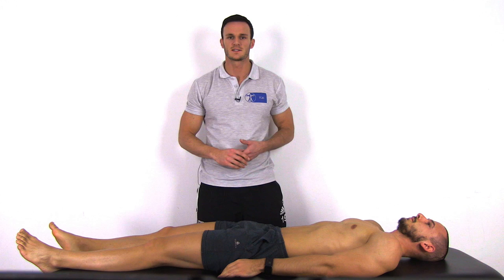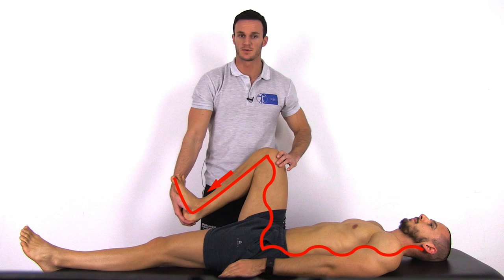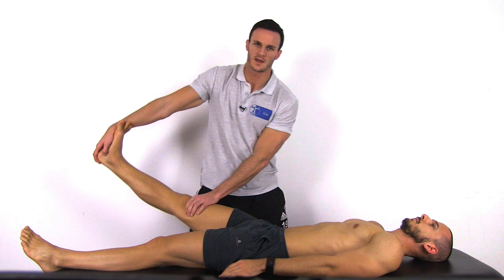To perform the SLR with a distal initiation, you first flex the knee and hip, and then dorsiflex the ankle to distally pretension the sciatic nerve to ensure maximal distal movement of the dura. From this position, bring the leg into an extended position again and passively flex the hip while you maintain dorsiflexion.